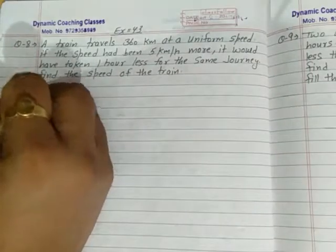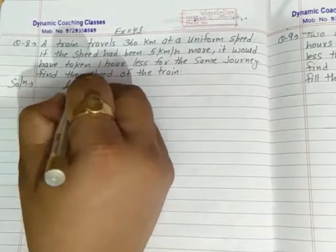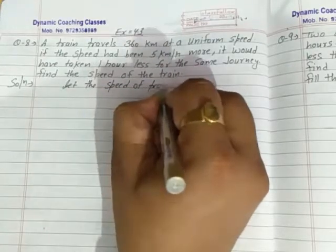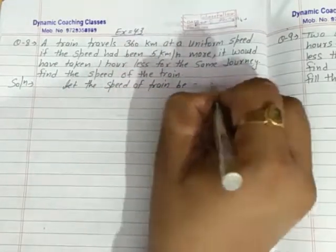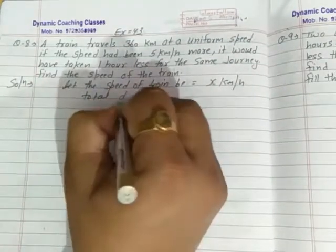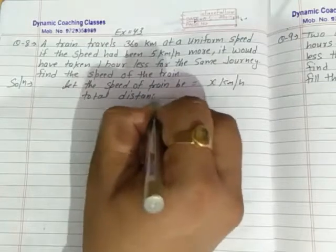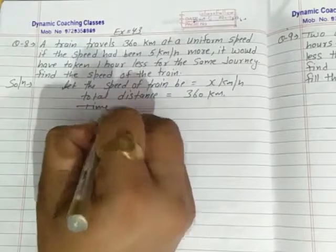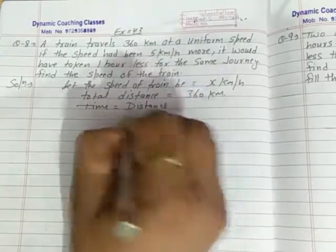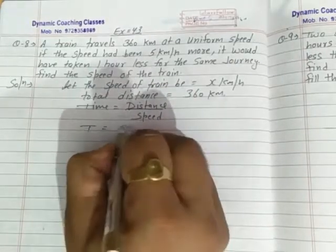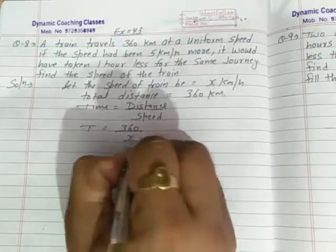It means simple that a train travels 360 km at a uniform speed. So let the speed of the train, which is uniform, be x km per hour. And the total distance which we have to travel is 360 km, so how much time will it be? The formula is distance upon speed, this is what I think is the T. Distance is 360 and the speed is x, so that's enough time.